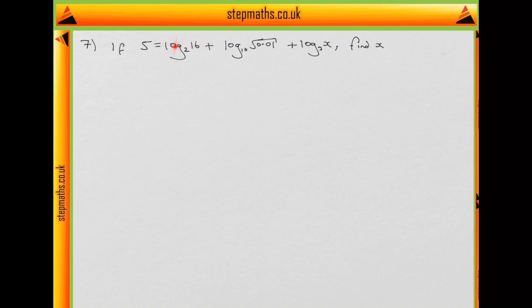How we proceed with these questions is to simplify the logs that are entirely numbers into integers. So we have a function of log base 2 of 16 and log base 10 of root 0.01. We can try and transform those into numbers, integers, and then solve for x. So I invite you to do this yourself before you watch my solution.